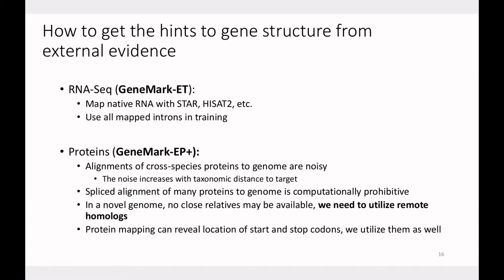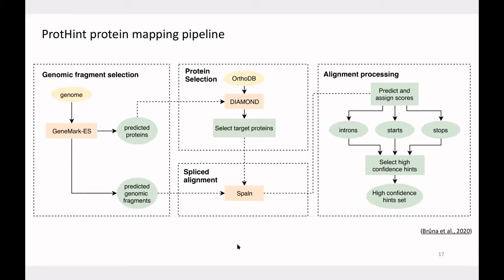Direct alignment of proteins to genomes — trying to align all existing proteins against all possible locations in the genome — is computationally infeasible. We need a better way to handle protein-to-genome alignment that can also filter out noise from remote protein alignments. The solution is a protein pipeline we developed, which selects protein-coding hints from proteins in four distinct steps.